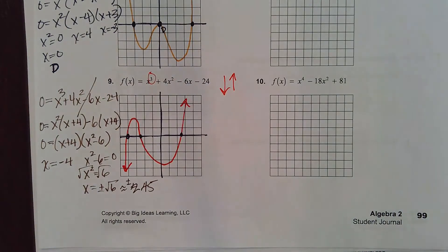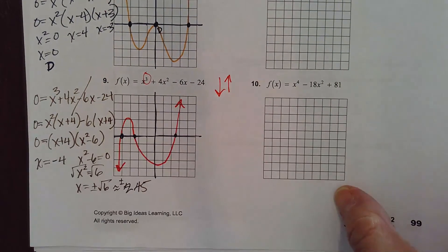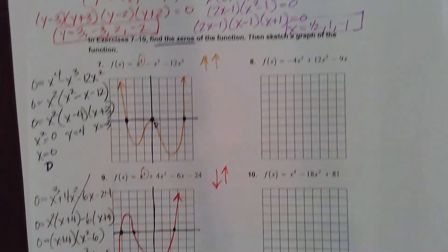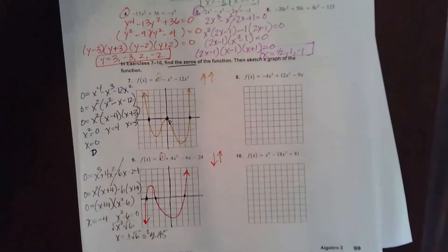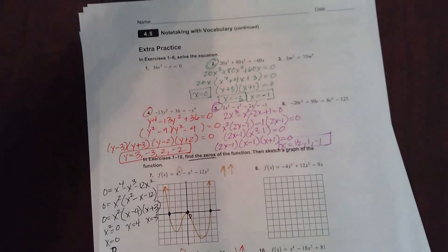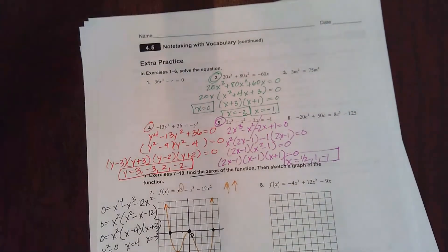For the graph: plot the three solutions — negative 4, negative 2.45, and positive 2.45. This is an odd degree with a positive leading coefficient, so end behavior is down then up. There are no doubles or triples, so the graph passes through all three zeros. Factoring should always be your first strategy.